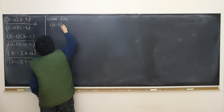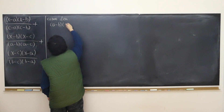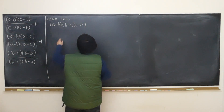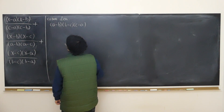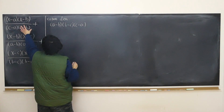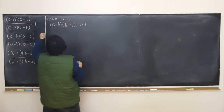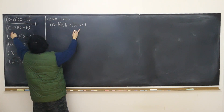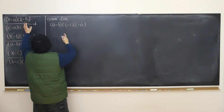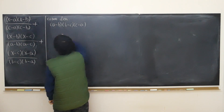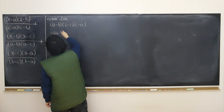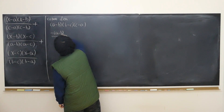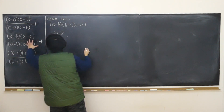The common denominator is (a minus b)(b minus c)(c minus a). The pattern is a-b, b-c, c-a. So for the first term, I only have to multiply both the top and bottom by the appropriate factor. Here I have (b minus c)(c minus a), so I just have to multiply by negative of (a minus b) to both the top and bottom.